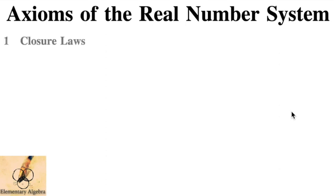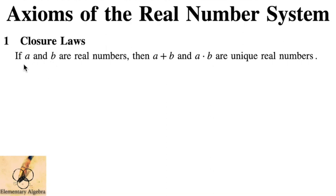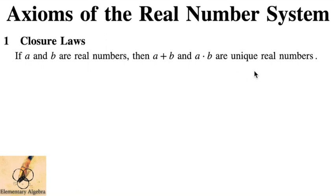We're going to start with the closure laws. The closure law states that if A and B are real numbers, then A plus B and A times B are unique real numbers. We use the raised dot for multiplication since the multiplication sign can be confused with the variable X. So the closure law states that if we add two real numbers or multiply two real numbers, the outcome is something unique — different from the two original numbers.